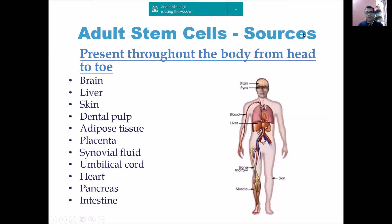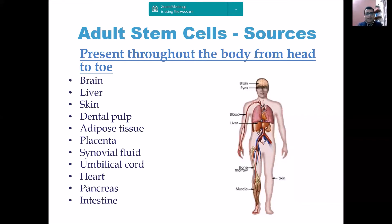Moving forward — adult stem cells are present in many tissues we discussed in the previous class: brain, liver, skin. Dental pulp is a very important tissue; there has been much research showing different types of stem cells found in dental tissue. Also placenta, synovial fluid, heart, pancreas, and intestine — we have discussed what different tissues have multipotent stem cells and progenitor unipotent stem cells.